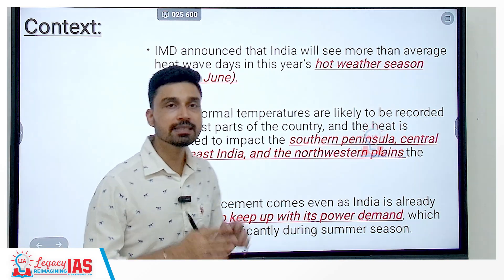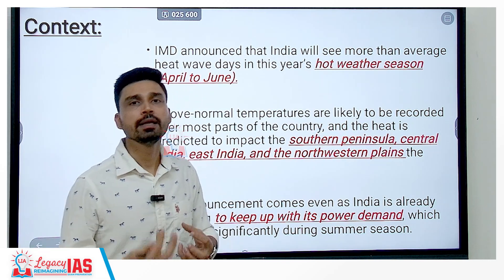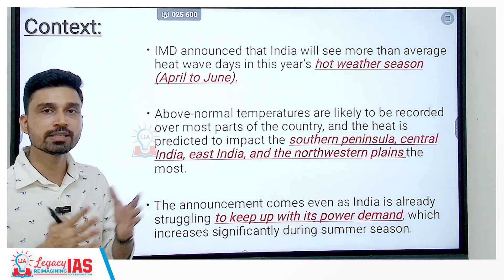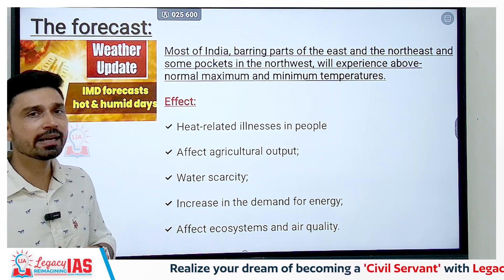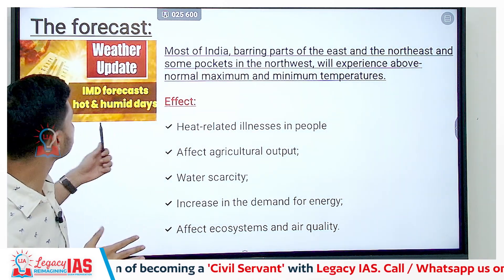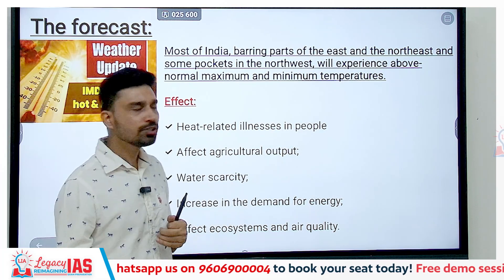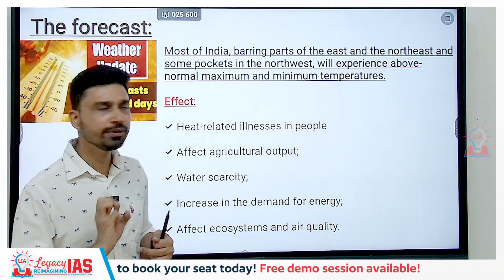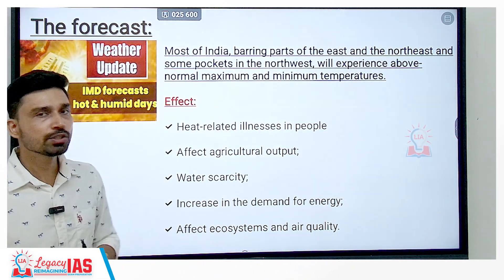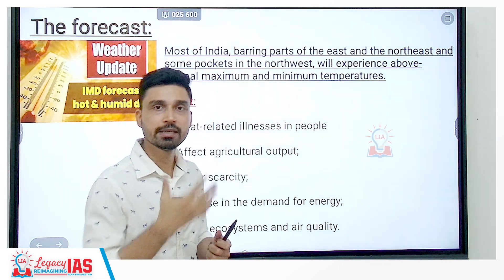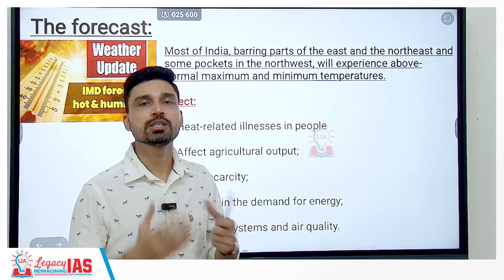This announcement comes even as India is already struggling to keep up with its power demand, obviously because demand for power consumption devices such as ACs and coolers increases significantly during the summer season. The IMD forecast indicates that most of India, except parts of eastern and northeastern India, will experience above normal maximum and minimum temperatures. The effect of this will include heat-related illnesses, especially for people who spend most of their time outside to sustain their livelihood.